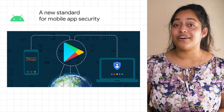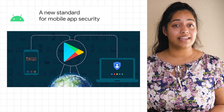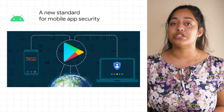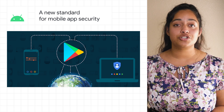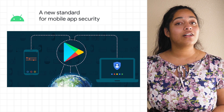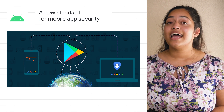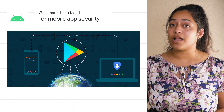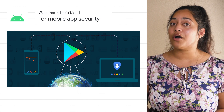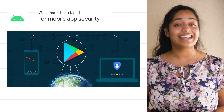We're excited to share an announcement from the Internet of Secure Things Alliance of a new mobile application profile, which provides a minimum set of commercial best practices for all cloud-connected apps running on mobile devices. This new security standard for mobile apps was developed in collaboration by over 20 industry stakeholders, including Google and Amazon.